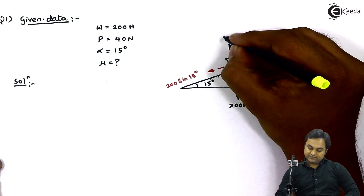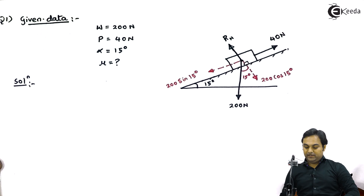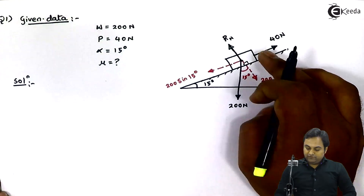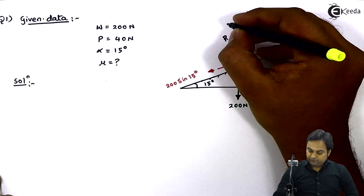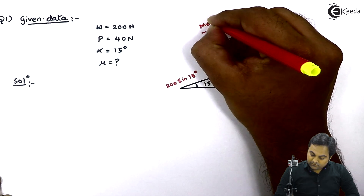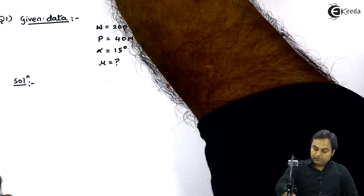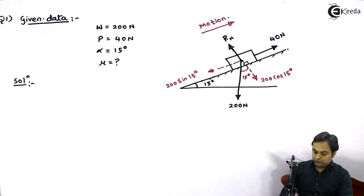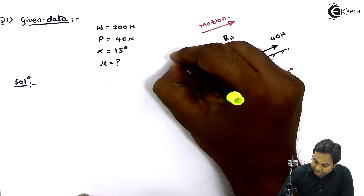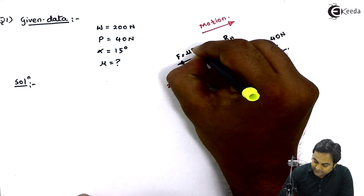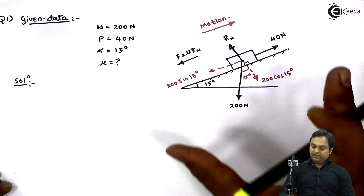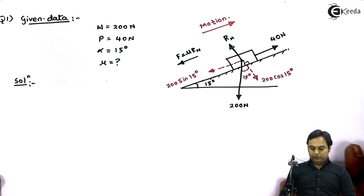The normal reaction R_n acts perpendicularly upward from the surface. Since the motion of the block is upward due to the 40 Newton force, frictional force acts opposite to the motion — that is, down the plane. The frictional force F equals mu times R_n. Having resolved all forces, we now proceed to calculate mu.